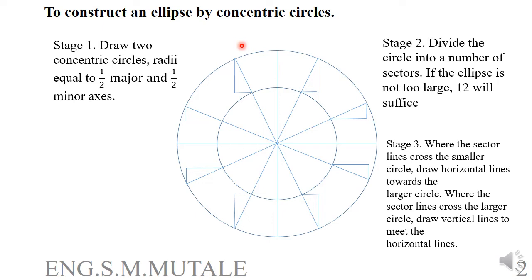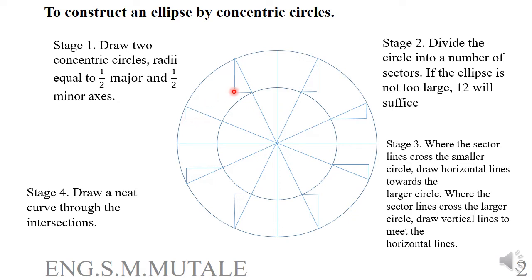Step four: draw a neat curve through all the intersection points where the vertical and horizontal lines meet. The curve will rest on the minor axis at the top and on the major axis at the sides. Draw the curve freehand or use French curves to produce a smooth ellipse. That is how you construct an ellipse by concentric circles.